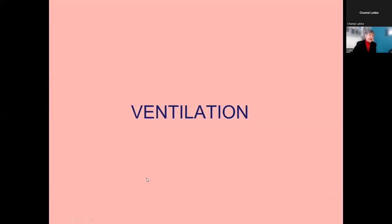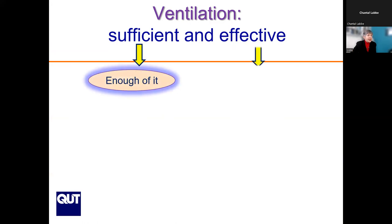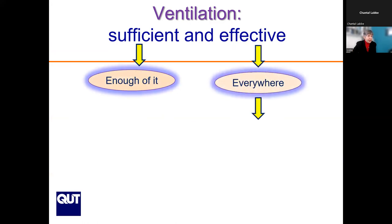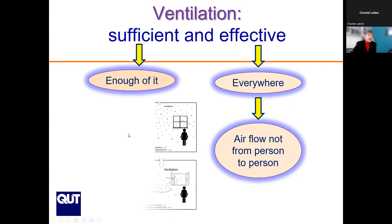Staying with the topic of ventilation, it is not only natural ventilation but there are also mechanical ventilation systems, typically used in office buildings. When we talk about ventilation, there are two important characteristics: sufficient and effective. Sufficient means enough of it, and effective means everywhere in the space with airflow not passing from person to person — and that is in relation to infection transmission.